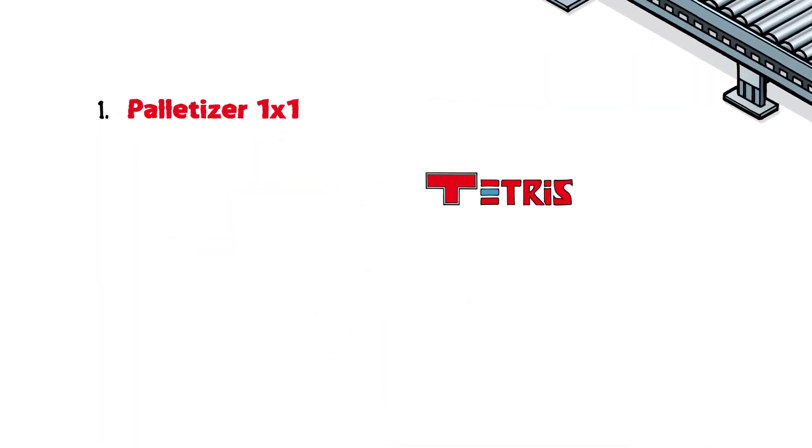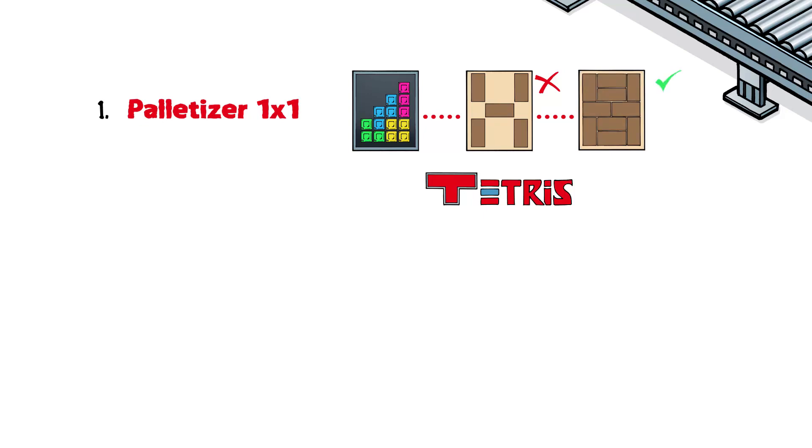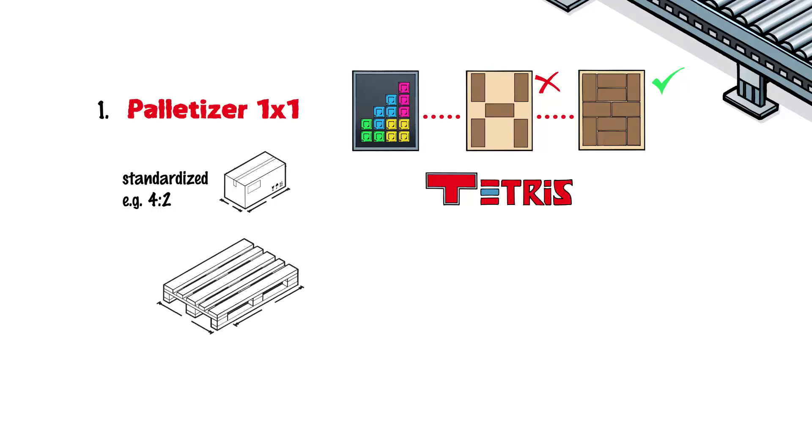Palletizers are basically playing Tetris in an industrial environment. Just like in Tetris, the aim of palletizing is to arrange objects without any gaps as far as possible. To make this easier, many dimensions and designs are standardized, both for packaging and for pallets.